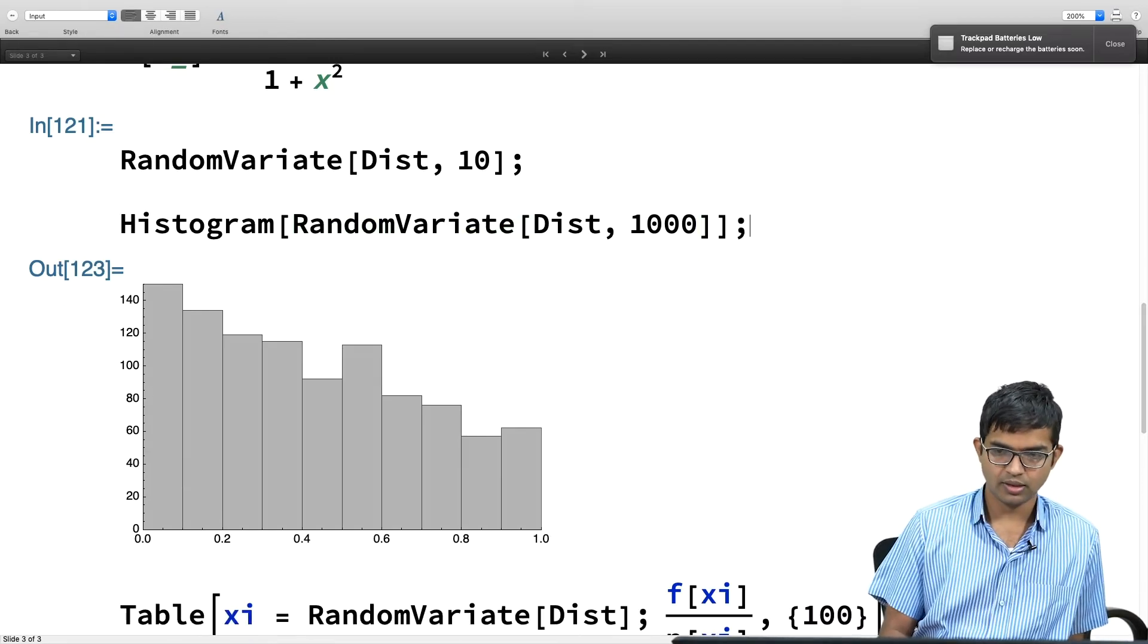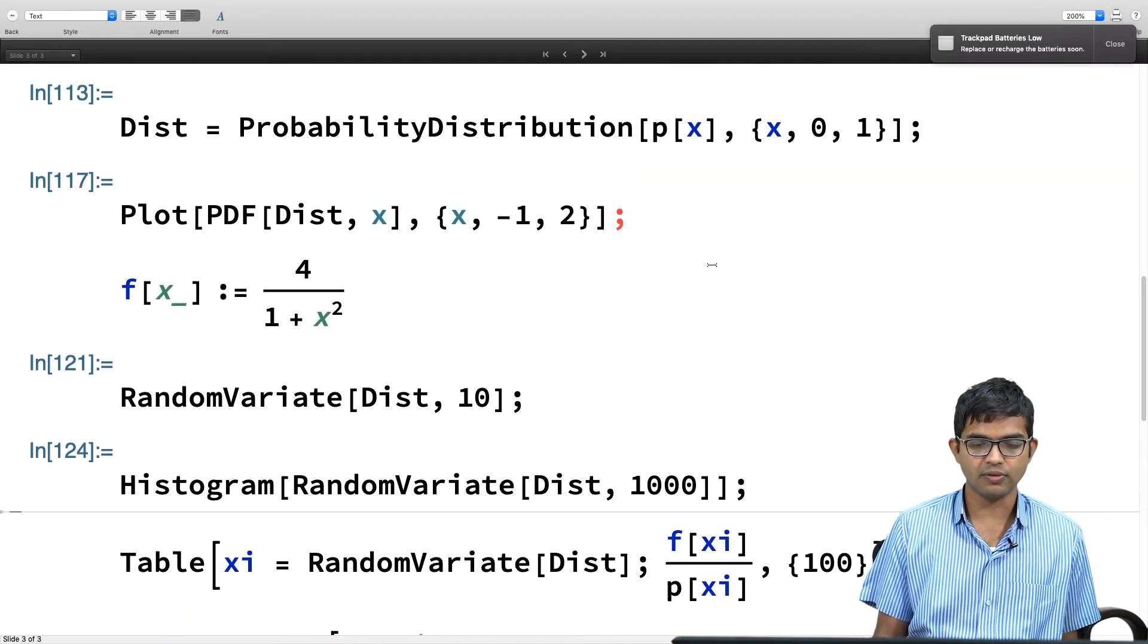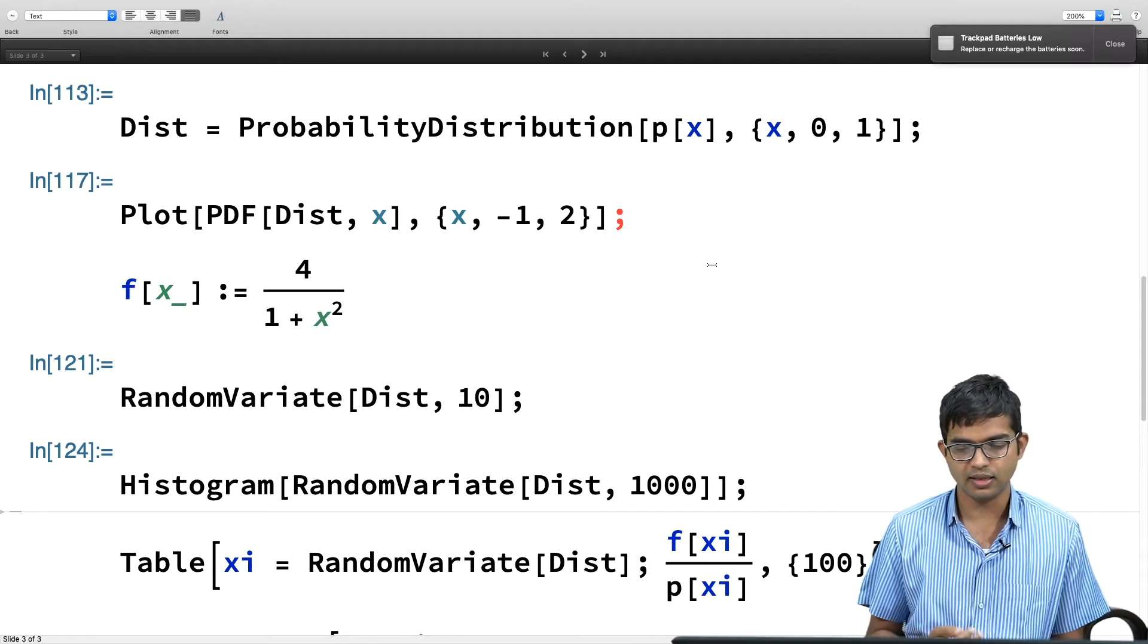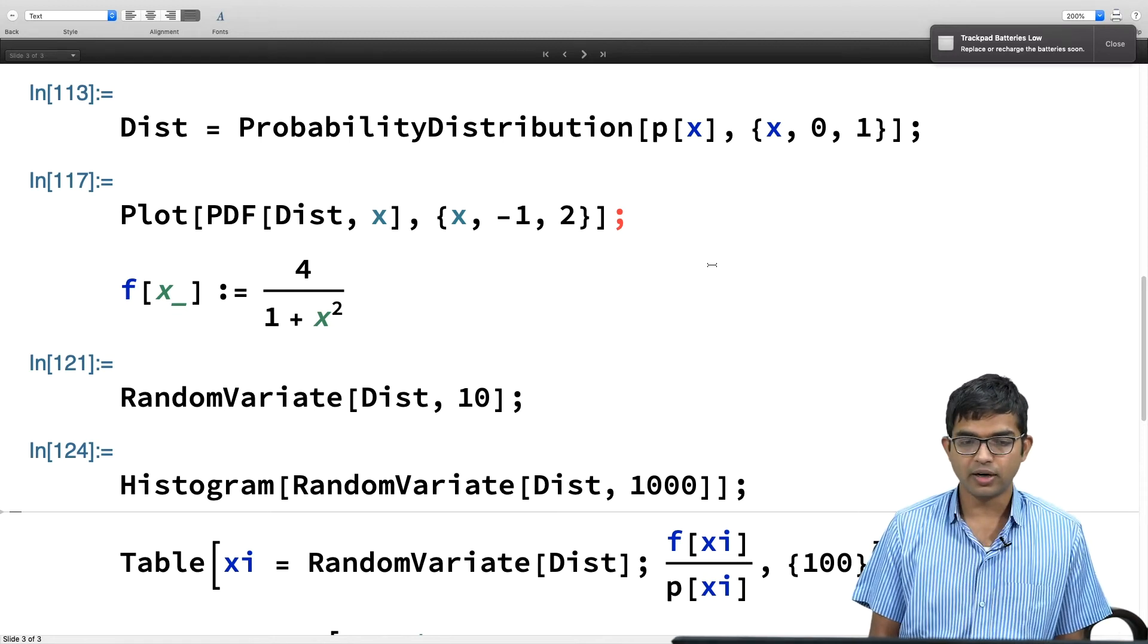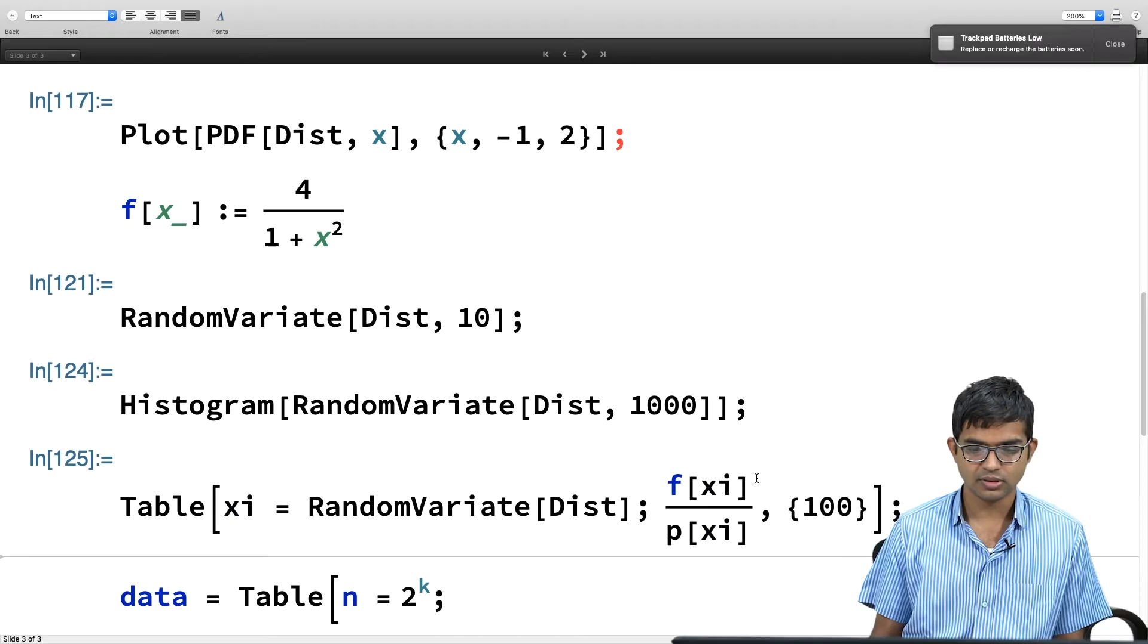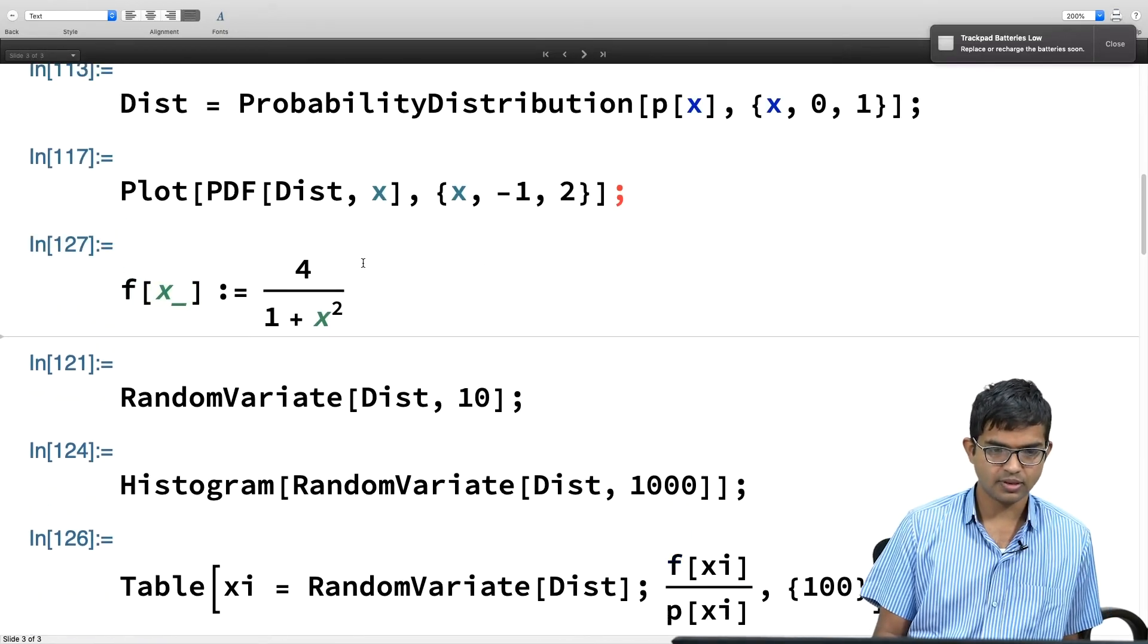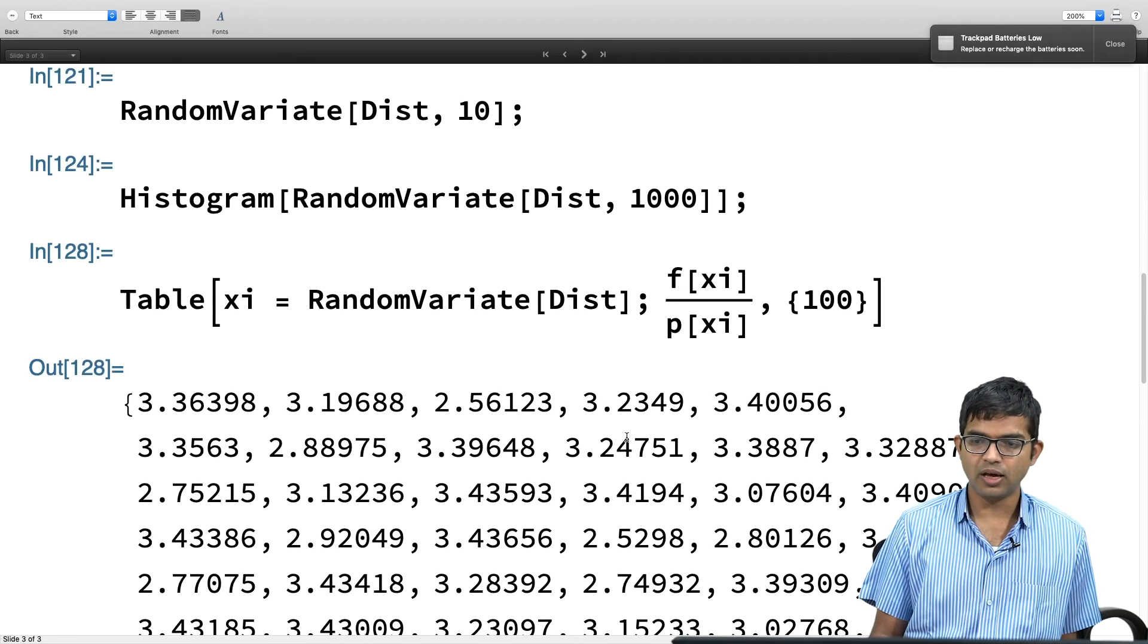I will hide this. Now I will define f(x) is 4 by 1 plus x squared. So now I am telling you that this dist now has the status of a full distribution because I have used this probability distribution function. I can histogram this, I can generate 100 instances of this using random variate. If I do random variate of, I can do it once. If you want, I will show you that. Random variate of dist. If I do it once, it will give me one instance of this.